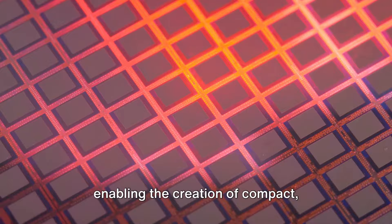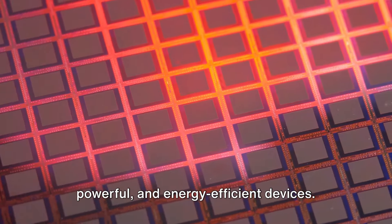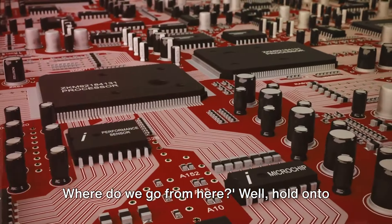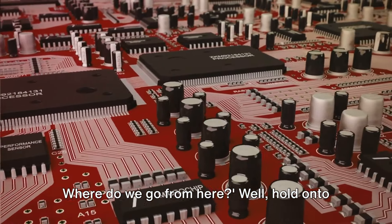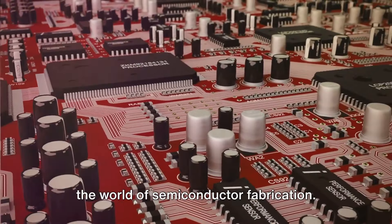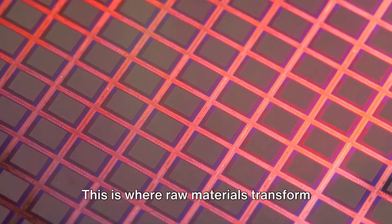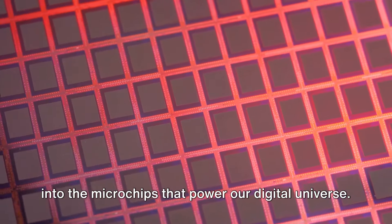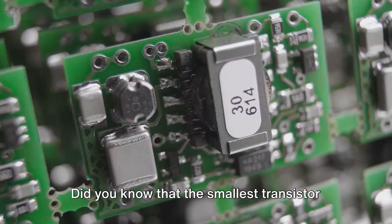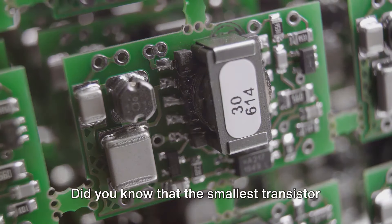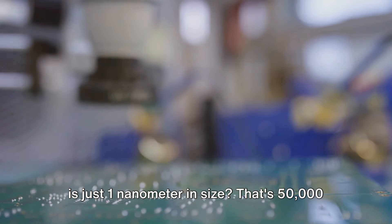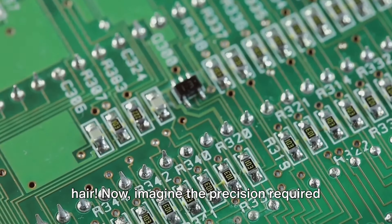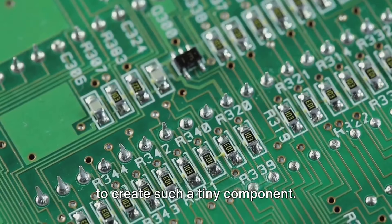They've revolutionized electronics, enabling the creation of compact, powerful, and energy-efficient devices. Now, you may be wondering, what's next? Where do we go from here? Well, hold on to your hats, because we're about to dive into the world of semiconductor fabrication. This is where raw materials transform into the microchips that power our digital universe. Before we get there, let's throw in a fun fact. Did you know that the smallest transistor is just one nanometer in size? That's 50,000 times smaller than the width of a human hair. Now, imagine the precision required to create such a tiny component.